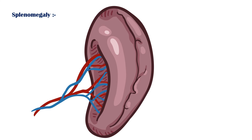Splenomegaly, or enlargement of the spleen. The spleen is also connected to the liver via the portal vein. Due to portal hypertension, blood backs up to the spleen as well, causing it to be swollen and enlarged.